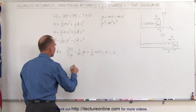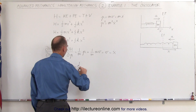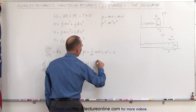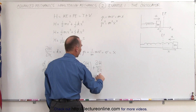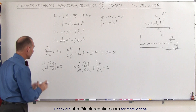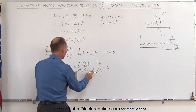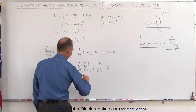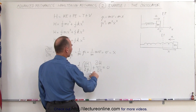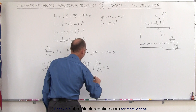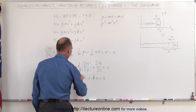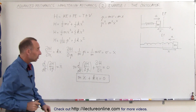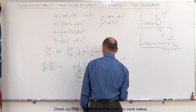Now we know that the mass times the derivative with respect to time of the partial of the Hamiltonian with respect to p, plus the partial of the Hamiltonian with respect to the generalized coordinate x, must equal 0. Since that's true, we can plug in these values. Since ∂H/∂p is equal to ẋ, we can write m times ẍ plus the partial of H with respect to x, which is kx, equals 0. This defines the equations of motion for the simple harmonic oscillator.